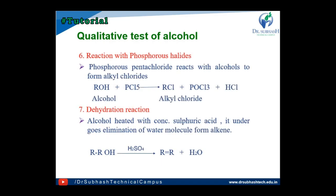The sixth test is the reaction with phosphorus halide. Phosphorus halides include phosphorus pentachloride (PCl5) and phosphorus trichloride (PCl3). Phosphorus pentachloride reacts with alcohol to form alkyl chloride. When alcohol reacts with phosphorus pentachloride, alkyl chloride is formed and POCl3 and HCl are liberated.